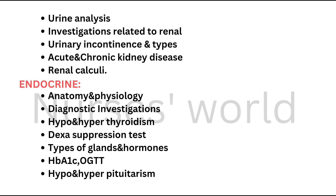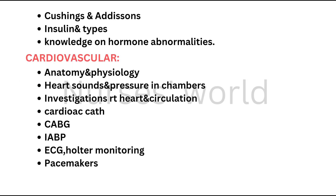Endocrine system — anatomy and physiology, diagnostic investigations. Hypo and hyperthyroidism: T3, T4, TSH values, and the DEXA suppression test. Types of glands and hormones, hormone abnormalities. HbA1c and OGTT are very important. Hypo and hyperpituitarism, Cushing's and Addison's disease. Insulin and its types, and knowledge on hormone abnormalities.